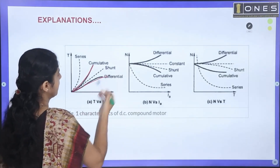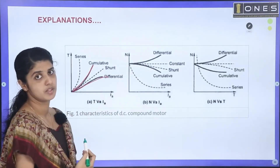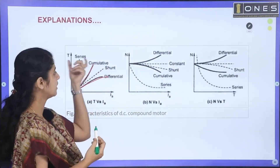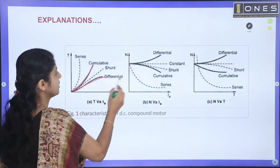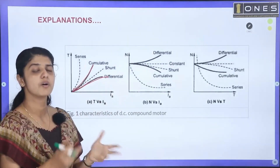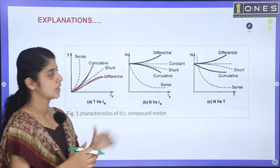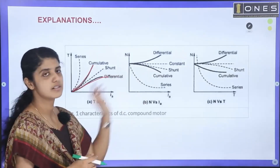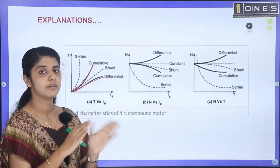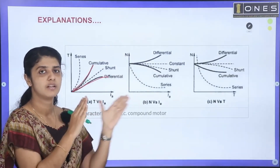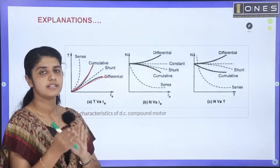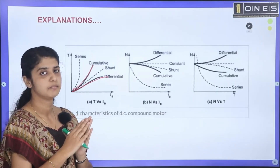Cumulatively, there is a cumulative and a differential type. In cumulative, the flux adds up (ADM), while in differential, the flux is in the opposite direction. The characteristics lie in between the series and shunt motor.